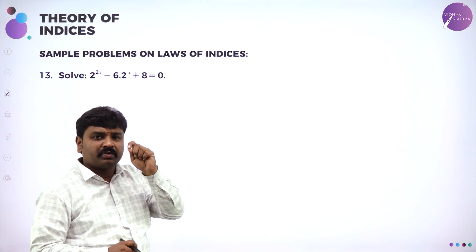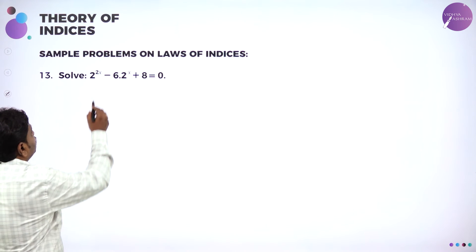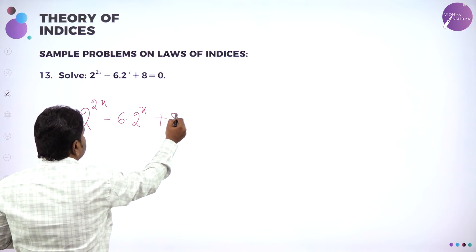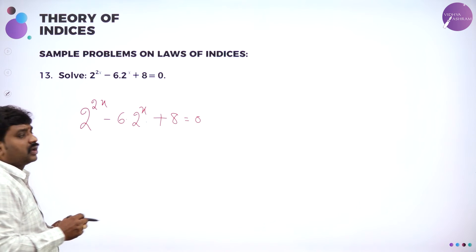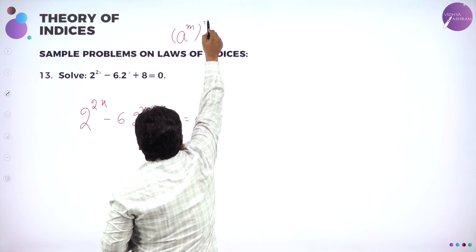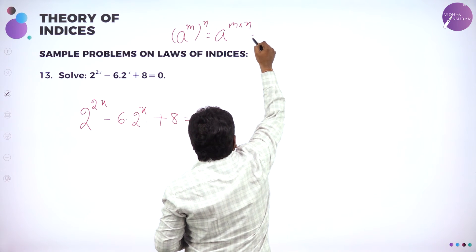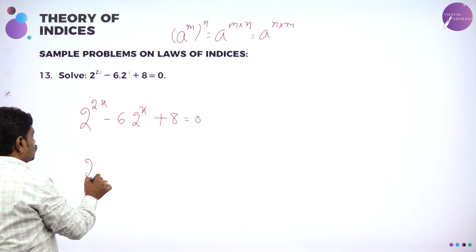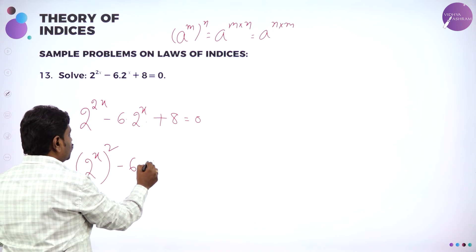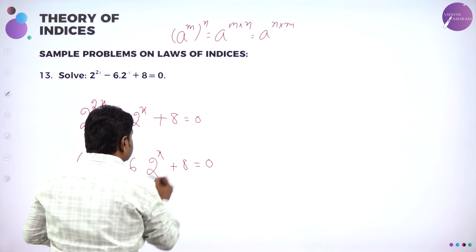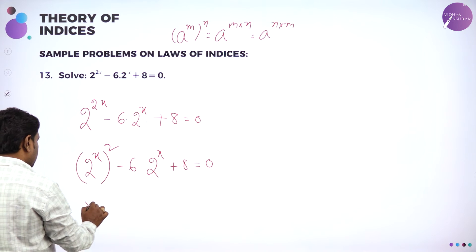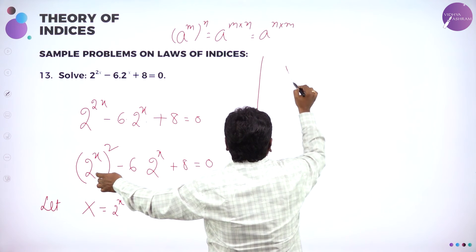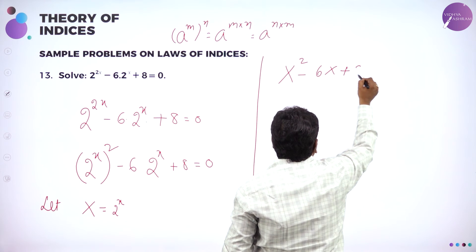Solve means find the value of x. How to solve? So now 2^(2x) minus 6 into 2^x plus 8 is equal to 0. You know law of indices says a^m whole power n = a^(m×n). So I can write 2^(2x) as (2^x)² minus 6 into 2^x plus 8 equals 0. Let us assume capital X is equal to 2^x.